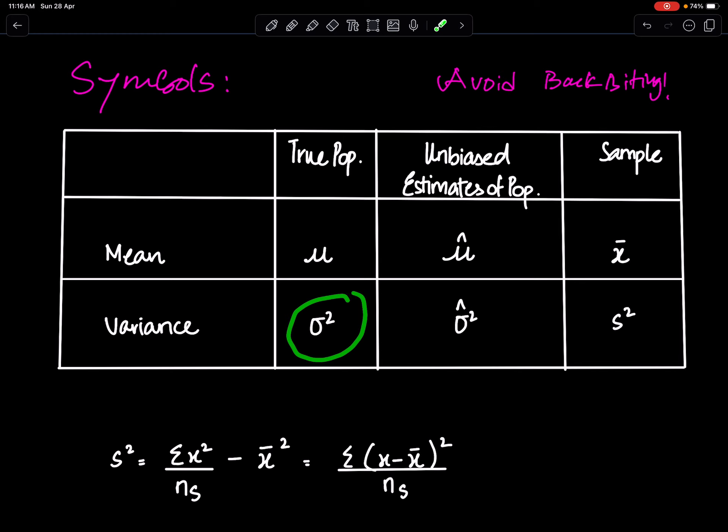Sigma square means the true population variance, whereas sigma cap square means the unbiased estimate of population variance, and s square means sample variance.